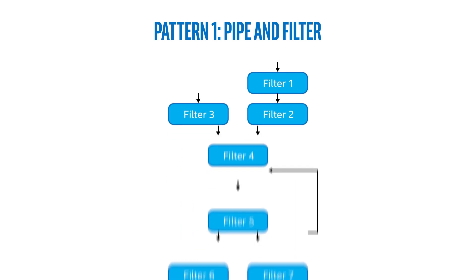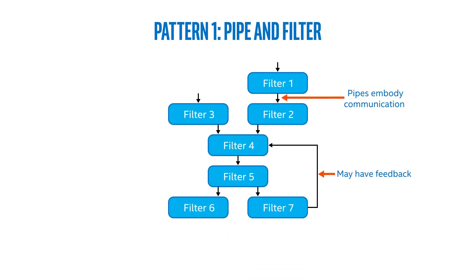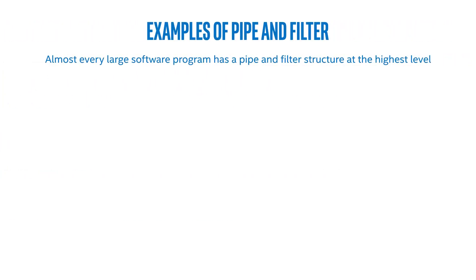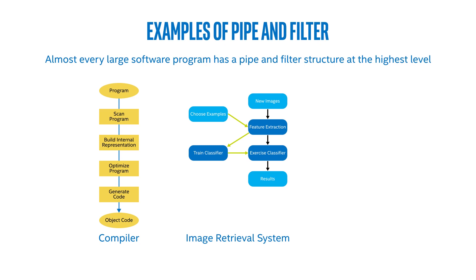So first, pipe and filter. In a pipe and filter structural pattern, we have a set of pipes embodying the communication and filters embodying the computation. Each filter only sees inputs and produces outputs, and there's no global or shared state. What are some examples of that? Well, almost every large software program has pipe and filter structure at the top level. Other examples are compilers, we'll see an image retrieval system later, and one that I worked with for many years, a logic optimizer, had at its top level a pipe and filter structure.